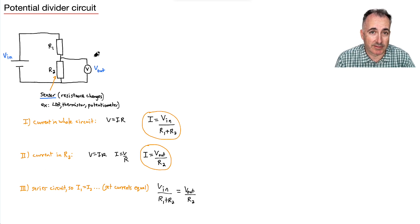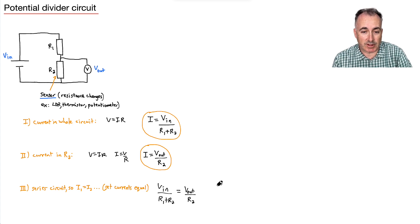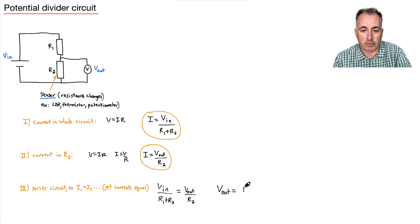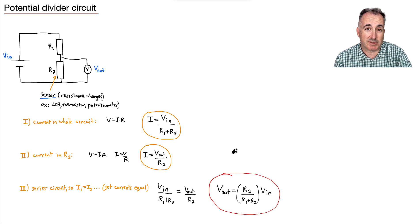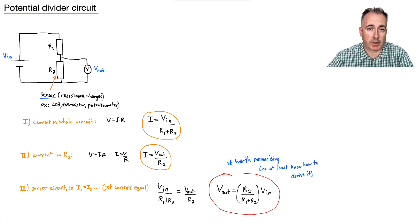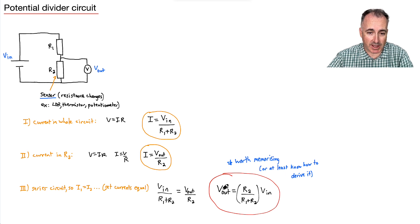Now you can get V_out by itself. We get V_out equals R2 over (R1 + R2), all times V_in. This is a really important equation — it's your potential divider circuit equation. It's worth memorizing, or at least make sure you know how to derive it.